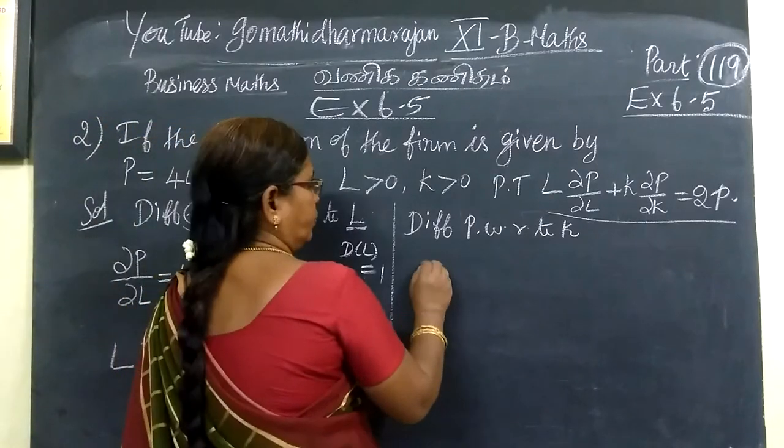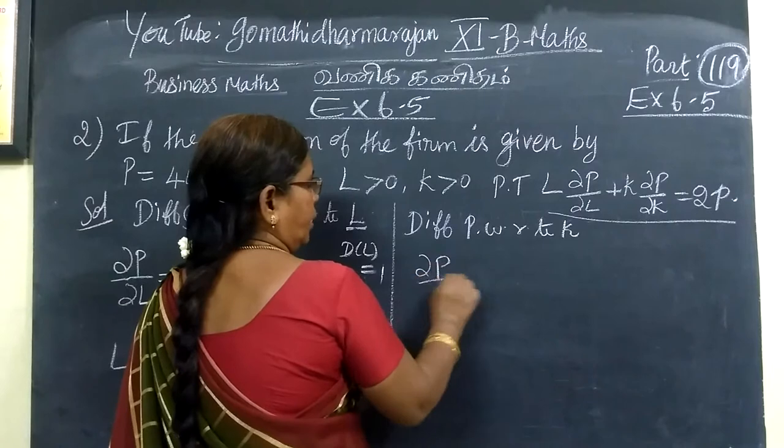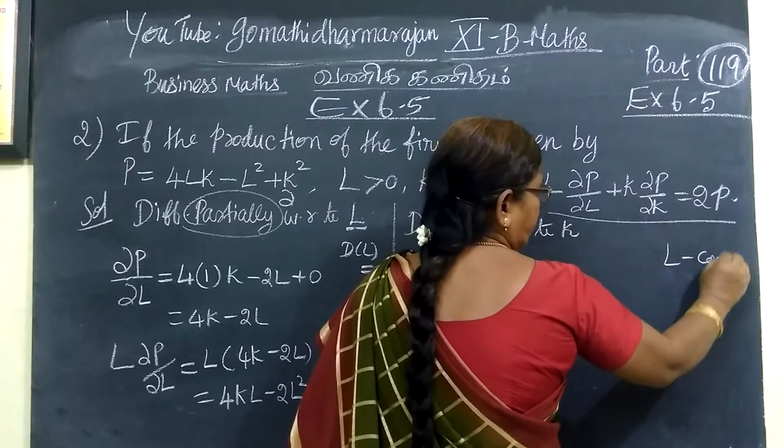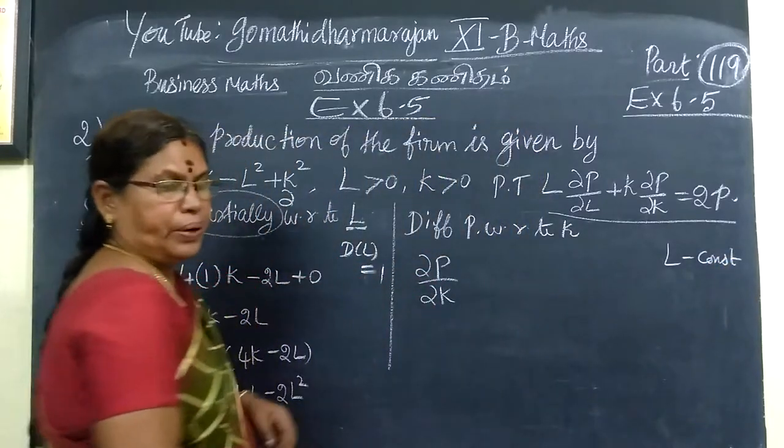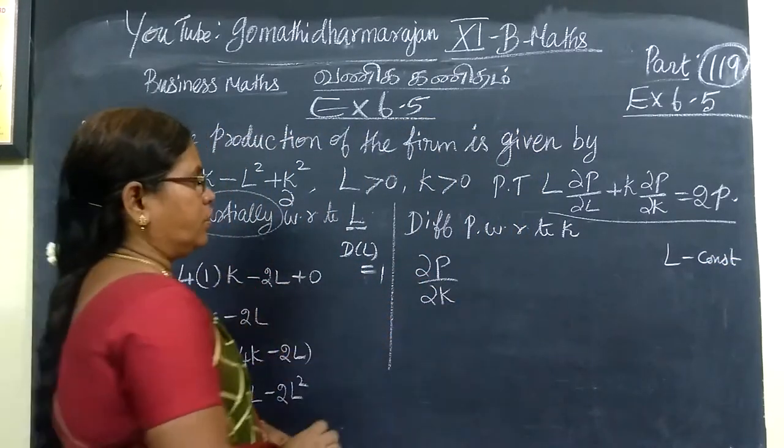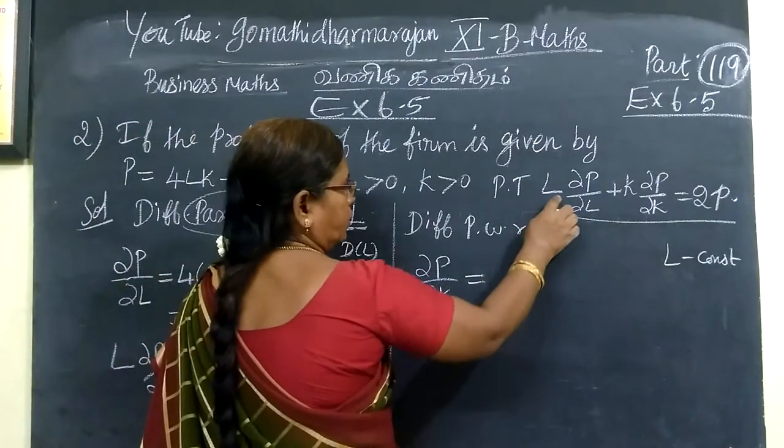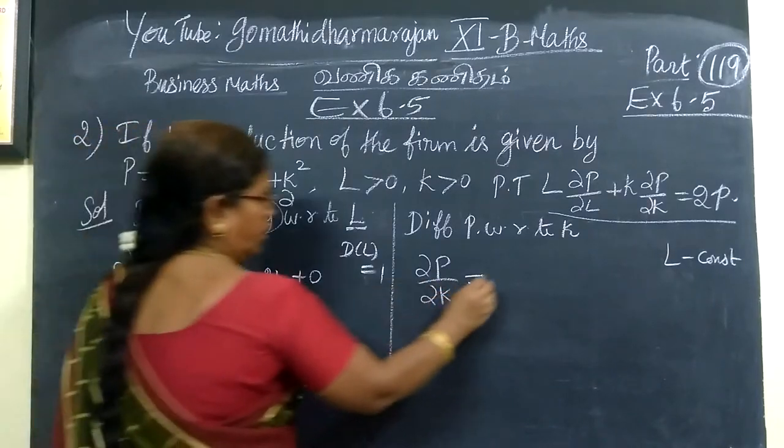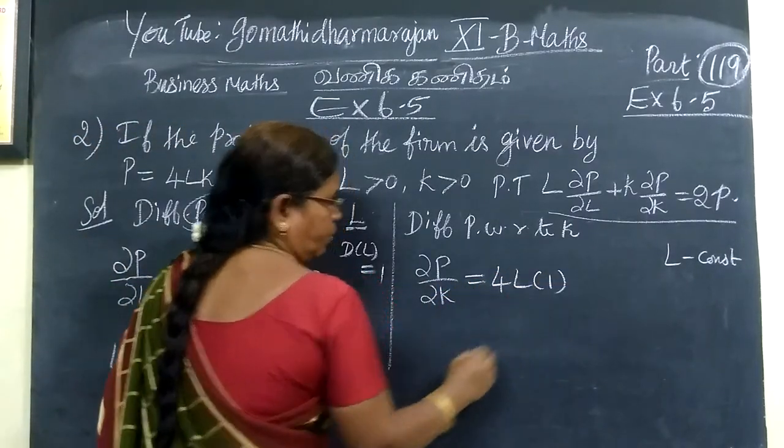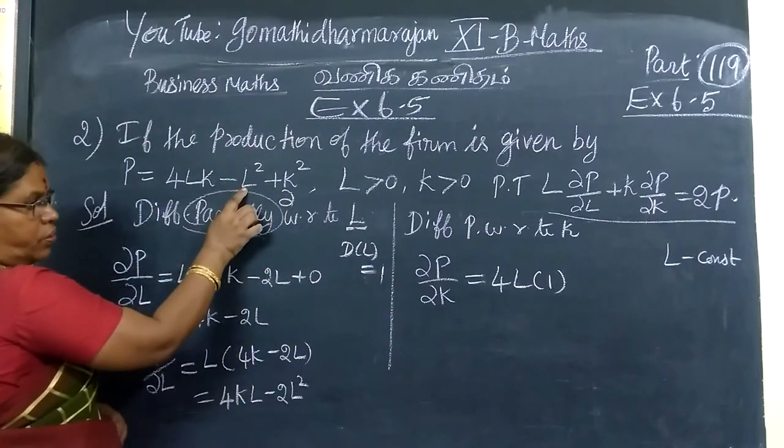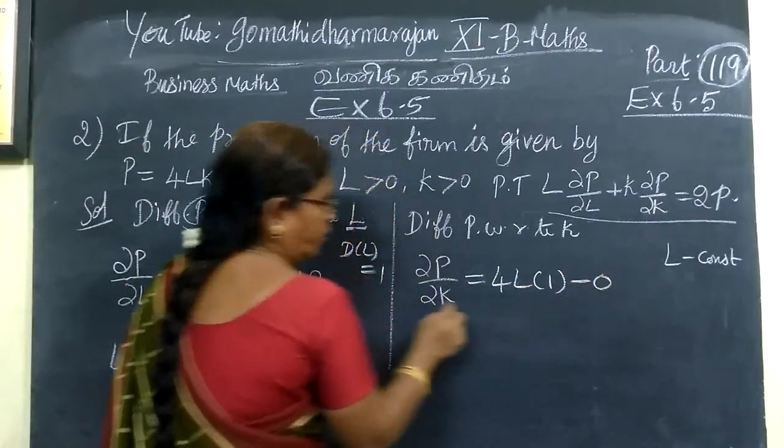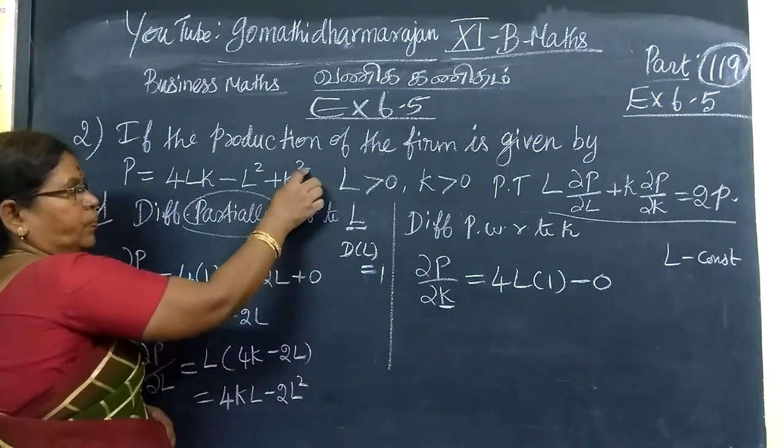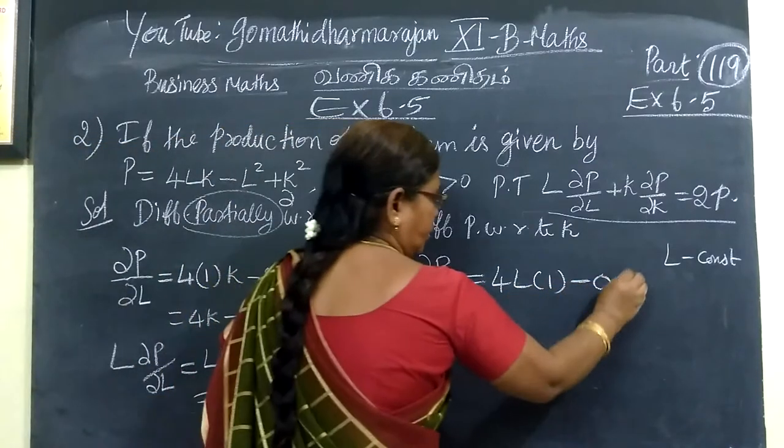Now let's find ∂P by ∂K. When we differentiate with respect to K, L is the constant. The derivative of 4LK with respect to K is 4L, since K becomes 1. Then L square, the derivative with respect to K is 0 because L is constant. So constant derivative is 0.